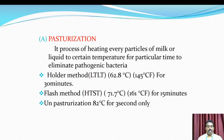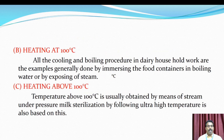The flash method — high temperature short time — is 71.7 degrees Celsius for 15 seconds. Ultra-pasteurization is 82 degrees Celsius for 3 seconds only. Heating at 100 degrees Celsius covers all cooking and boiling processes in the household. An example is generally done by immersing food containers in boiling water or exposing them to steam.